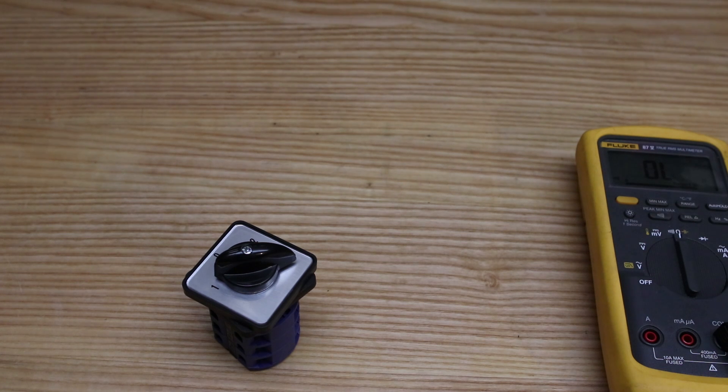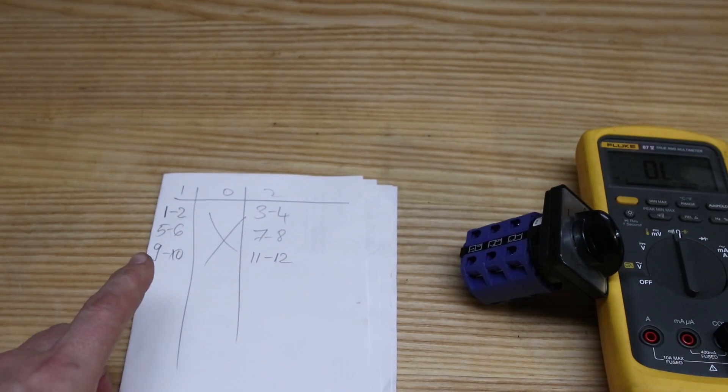You get an idea of which connections have continuity or they're connected to each other in which position of the switch. What you're going to end up with in the end is something like this.